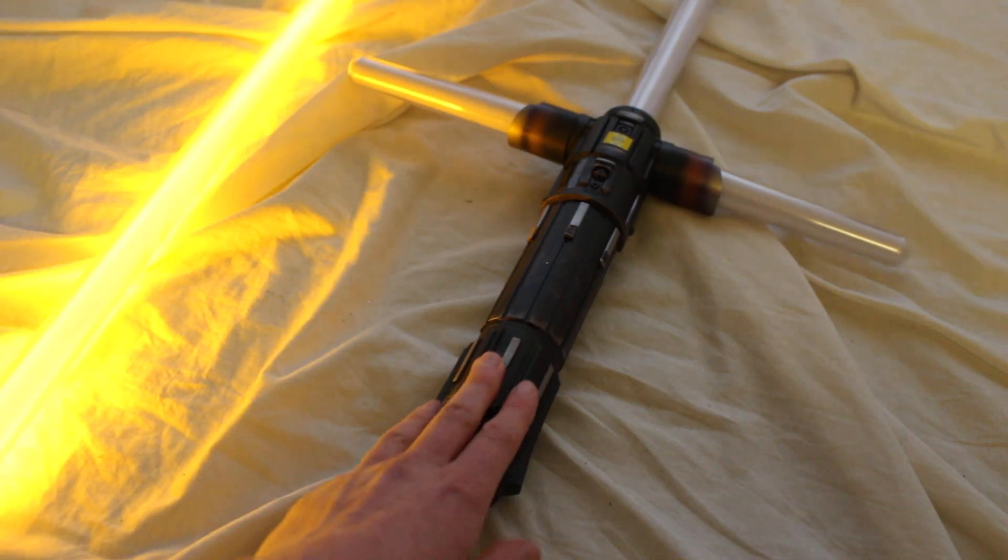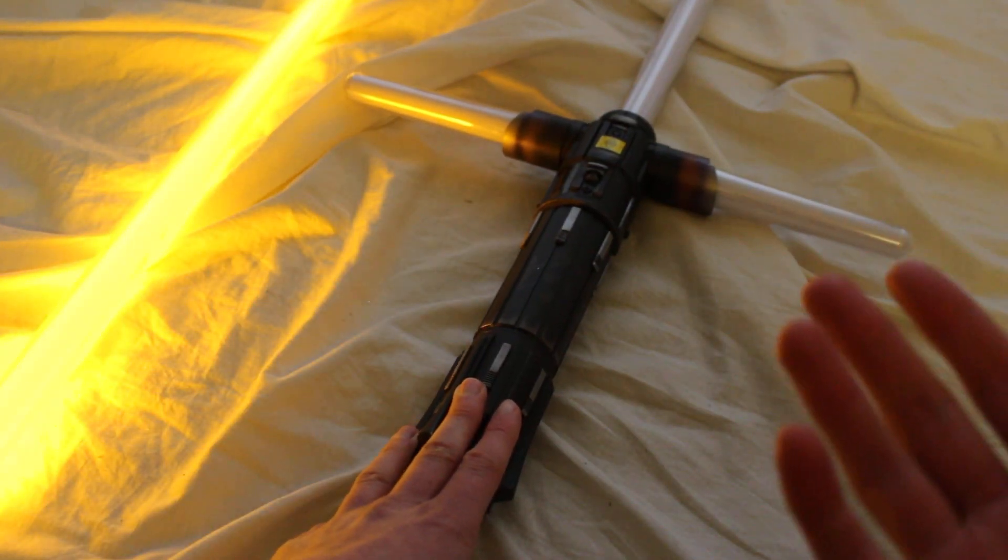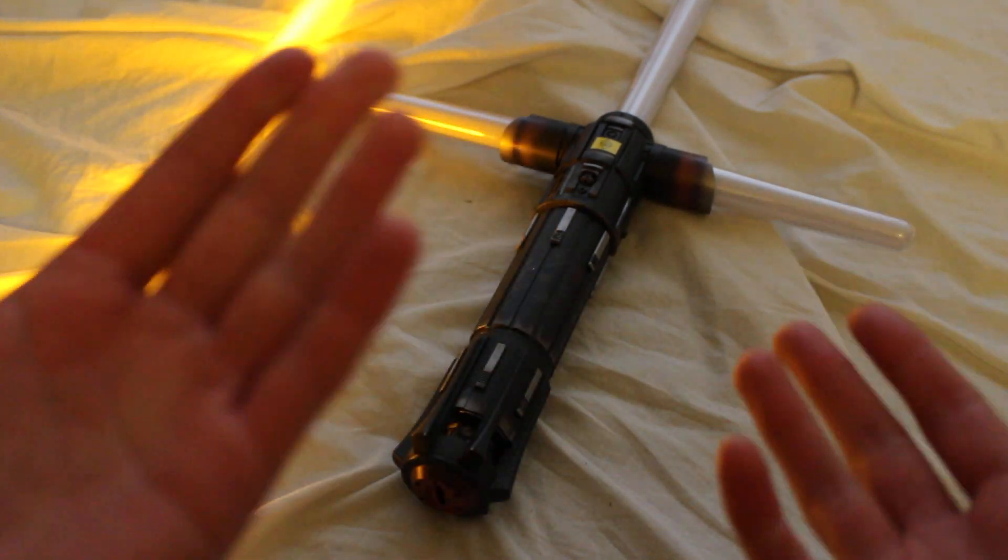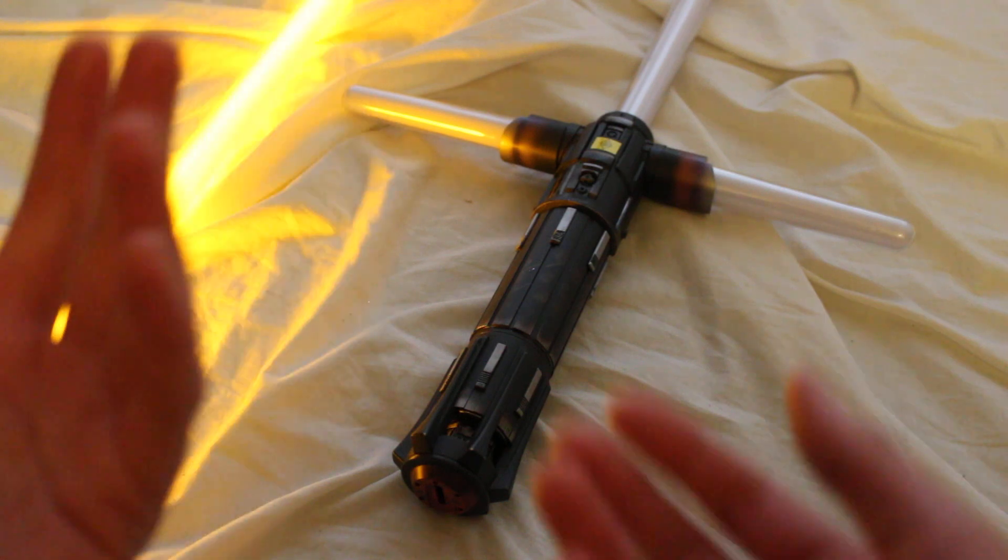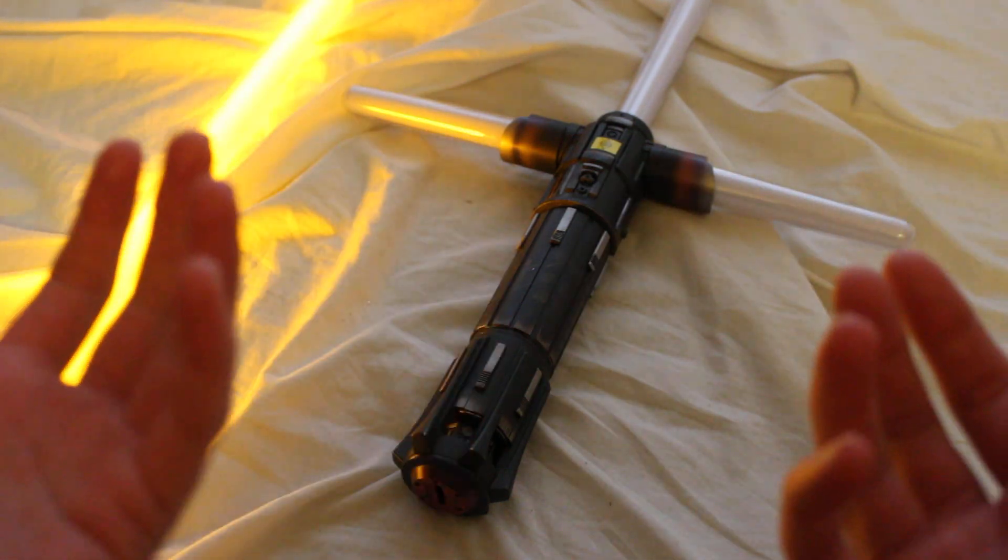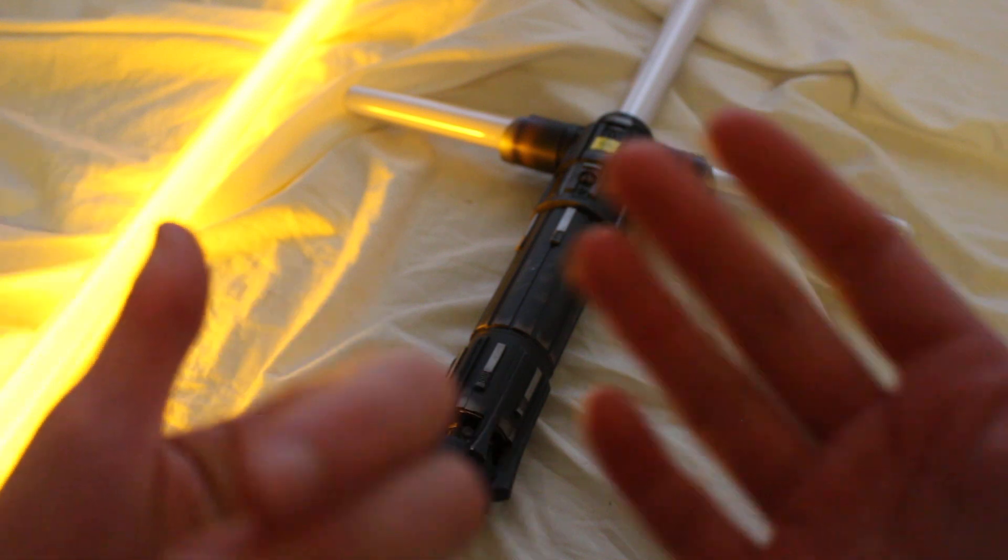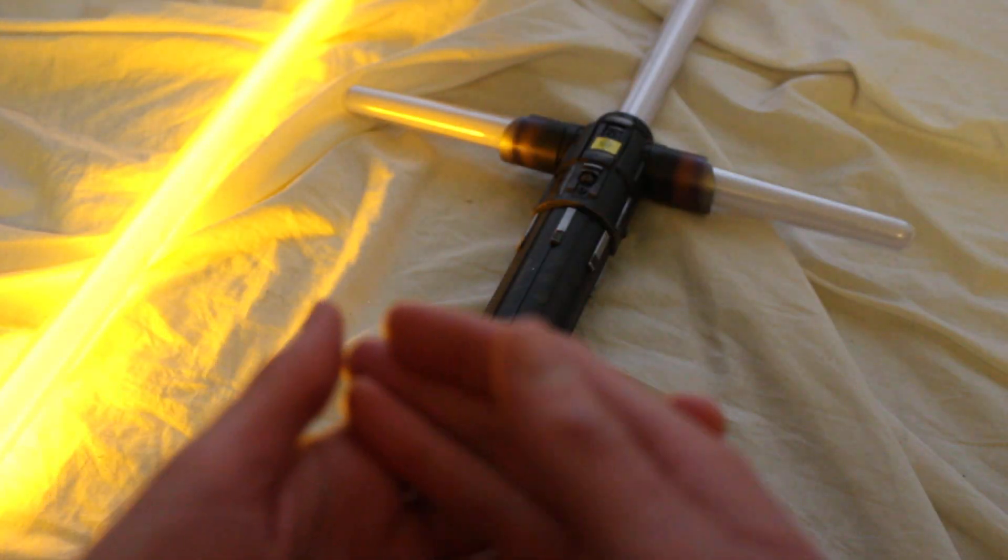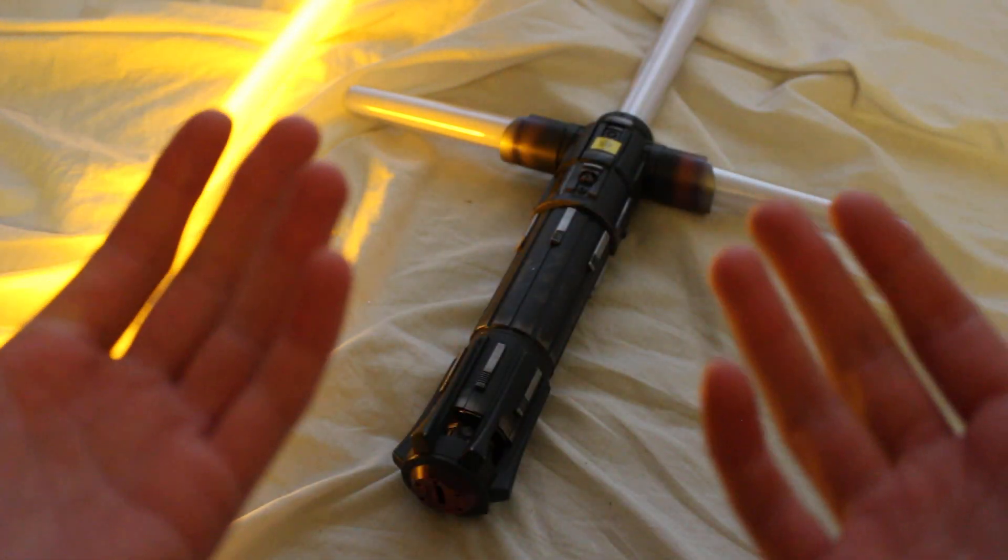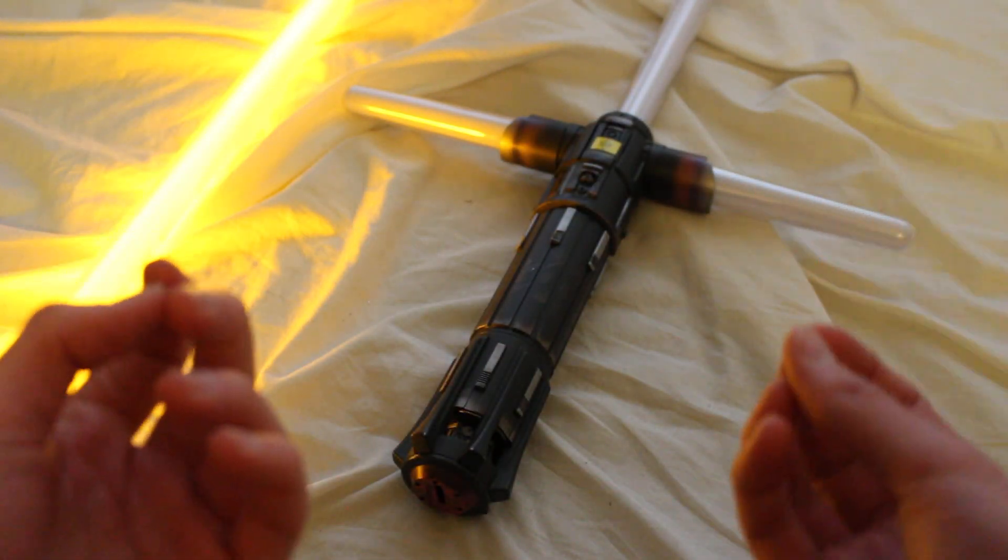So this is arguably one of the biggest symbols of the sequel trilogy. It has this distinctive cross guard design and the unstable blades that mirror Kylo Ren's personality. So he's very unstable in the sense that he's angry and throws these temper tantrums. He's also unstable in the fact that he's wavering in his dedication to the dark side.